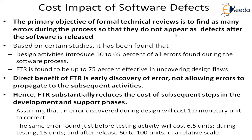Now let's look at the cost impact of defects. In the last class, we discussed the cost of quality and said there are three types of costs: QA planning cost, quality assurance activities such as reviews, inspections, and audits, and defect fixing cost. Among all three, defect fixing cost is normally the highest. But if you do the first two, the defect fixing cost becomes less because the defects themselves are reduced.